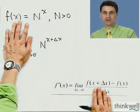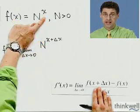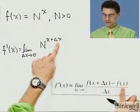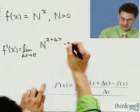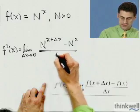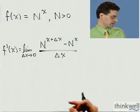I took the x and replaced it by x + Δx. Now I subtract off the function, so minus N^x, and divide all that by Δx. So that's the limit I have to figure out.